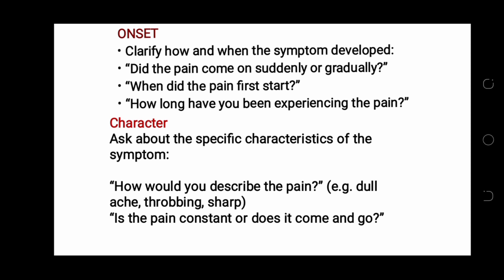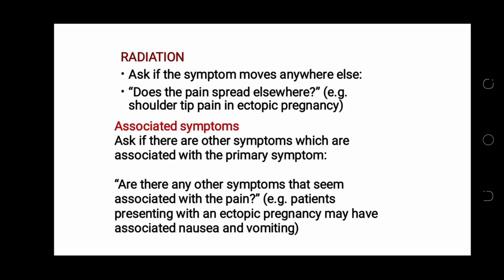Onset is very important — clarify how and when the symptom developed. Did the pain come on suddenly or gradually? When did the pain first start? How long have you been experiencing the pain? Character is also important — how would you describe the pain? For example, dull, dull ache, throbbing, or sharp. Is the pain constant or does it come and go?